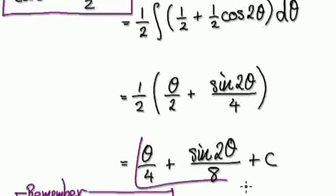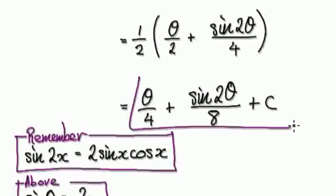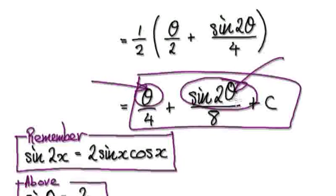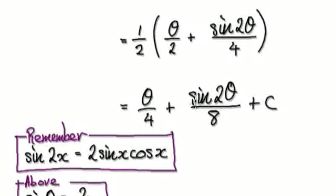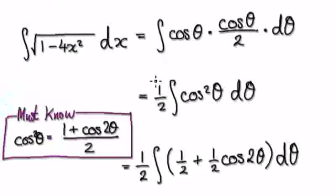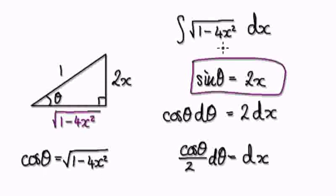The thing is, we don't want the answer in terms of θ — we want it in terms of x. So when you reach this stage, you need to find a way of replacing θ. Going back to the start, we said sin θ = 2x. So if you want θ, take the inverse sine of both sides: θ = arcsin(2x). So now you have a way of expressing θ in terms of x.